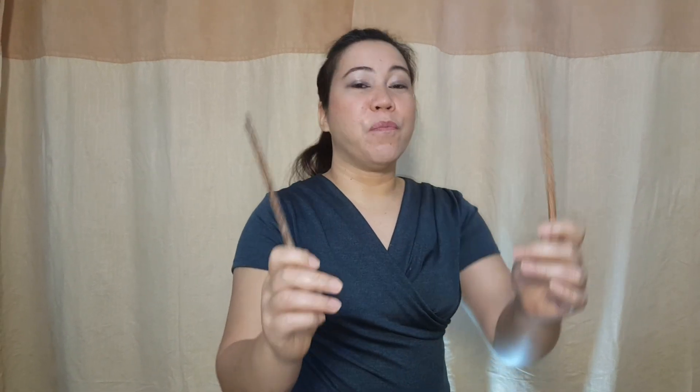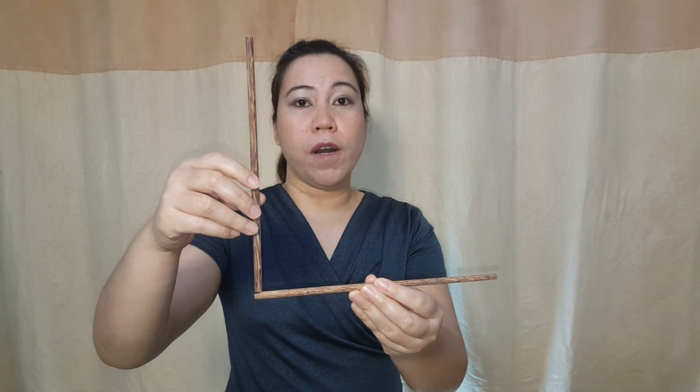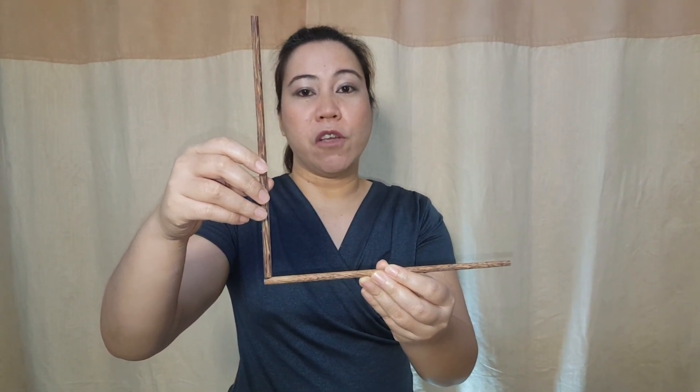When two lines meet, they intersect. Perpendicular lines are a special type of intersecting lines. When the two intersecting lines form a 90 degrees or a right angle, they are called perpendicular lines.